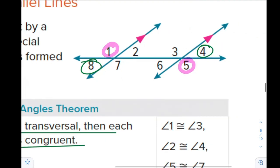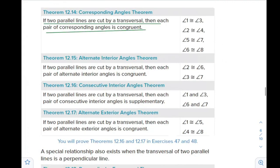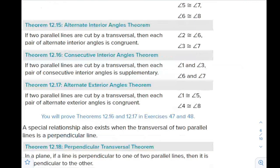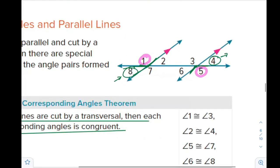By a quick check, you can see that one angle is obtuse and the other is also obtuse on the other side, while one is acute and the other is acute. Remember, if the lines are parallel, you have one of these two cases: either the angles are congruent or they are supplementary, like in the consecutive interior angle theorem, also called same side interior angles.